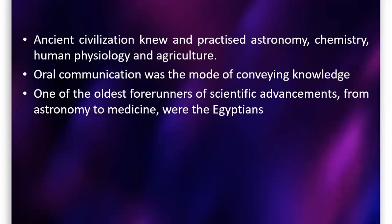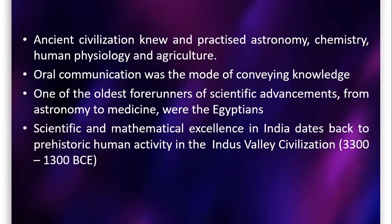One of the oldest forerunners of scientific advancements from astronomy to medicine were the Egyptians. They preserved mummies long before, and knew much about medicines and astronomy. In India, scientific and mathematical excellence dates back to prehistoric human activity in the Indus Valley civilization — between 3000 and 2300 BCE.